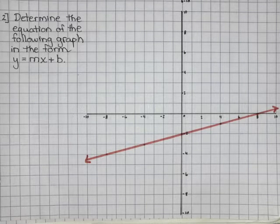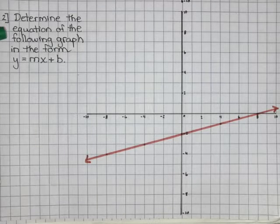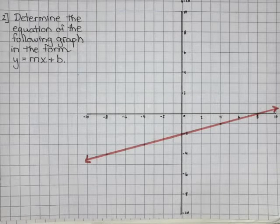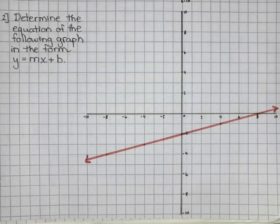This is the last part of our lesson on graphing lines. Our final question says: determine the equation of the following graph in the form y equals mx plus b. We've just done examples where we graphed when given the equation, so the question is, using our knowledge of how we make a graph, can I work backwards to figure out what this graph is?